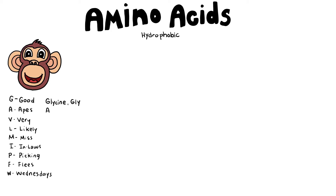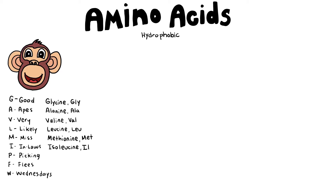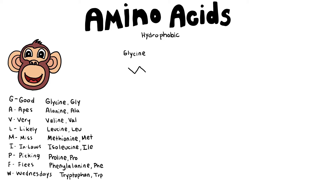Remember that G stands for glycine, A for alanine, V for valine, L for leucine, M for methionine, I for isoleucine, P for proline, F for phenylalanine, and W for tryptophan.